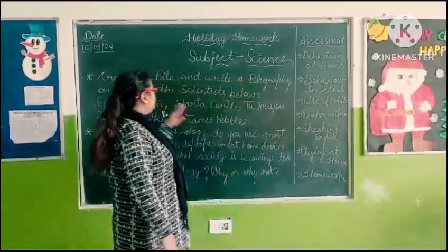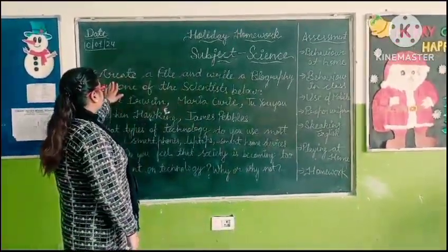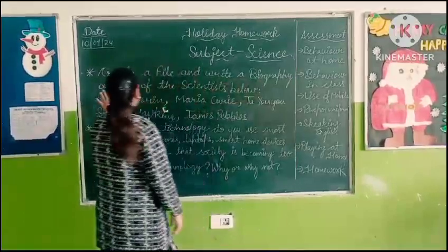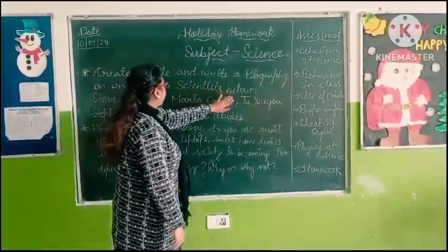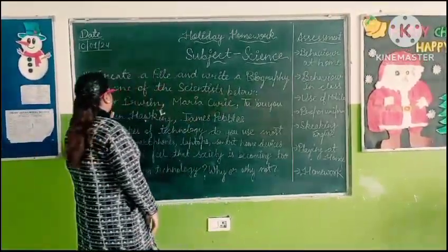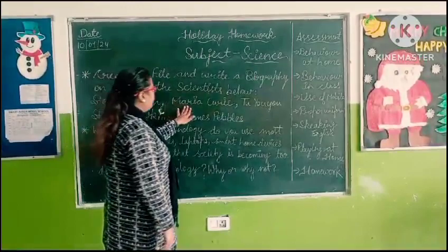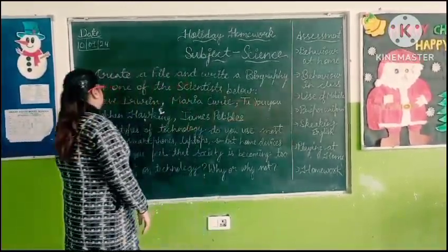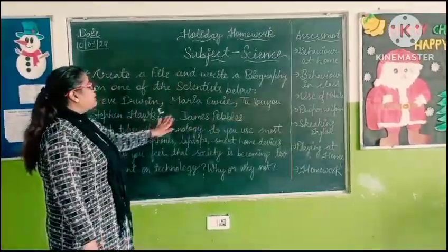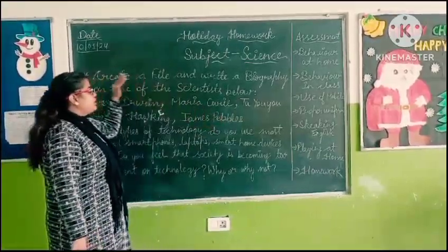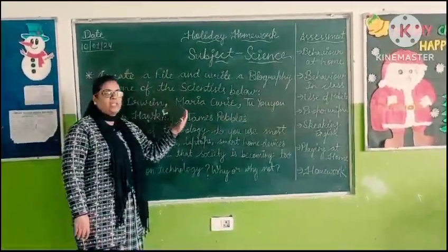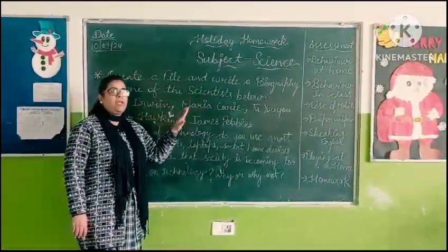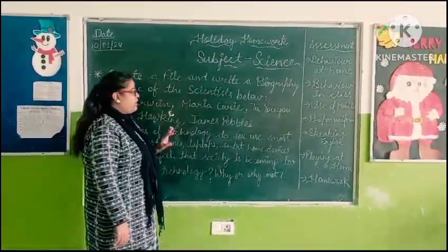There are two questions in your homework. First is: create a file and write a biography on one of the scientists below — Steve Irwin, Marie Curie, Tu Youyou, Stephen Hawking, James Stubb. Here are five scientists' names; you can write a biography on one of them.